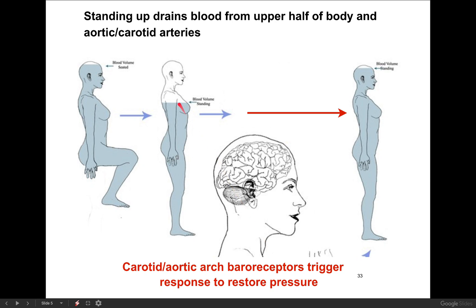These baroreceptors are right there to sense that change. They're going to say: there is not much blood in your aorta, not much blood in your arteries — your blood pressure is low — and send that signal to the medulla. The medulla is going to decide if that blood pressure is too low and what to do about it. This is why you feel dizzy if you get up too fast: blood drains down, blood pressure in the arteries decreases, making it harder to pump blood upwards against gravity.